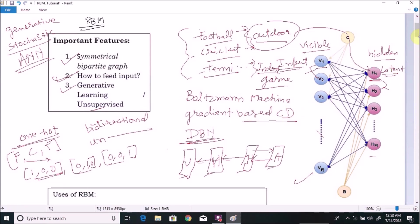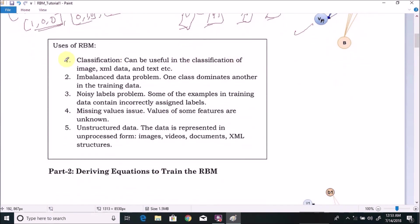Now, let us go through some use cases of Restricted Boltzmann Machines. So the first use is classification. We can use the Restricted Boltzmann Machines to classify images, XML data, and text, etc. Similarly, we can use RBM for imbalanced data problem. What is imbalanced data problem? Actually, in multi-class classification several times we find that some of the class contains very low count of features, supporting features. So by using Restricted Boltzmann Machines, we can generate the samples for that dominated class.